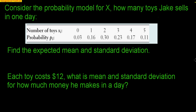Here's an example. Consider the probability model for X, how many toys Jake sells in one day. The model shows options 0, 1, 2, 3, 4, 5 with probabilities underneath each. The first question is a review: find the expected mean and the standard deviation. We use the notation for the expected value of X and its standard deviation — those two notations are really important.